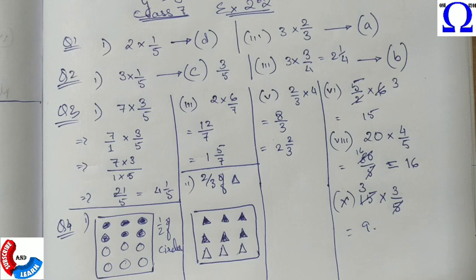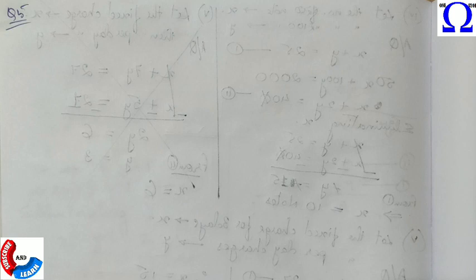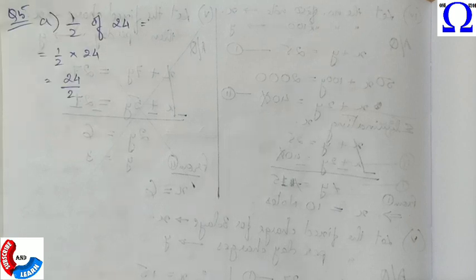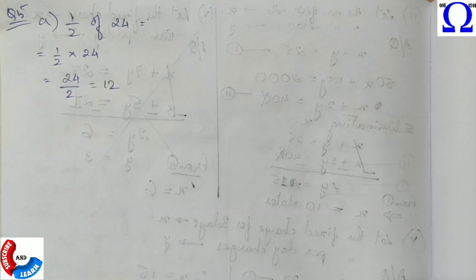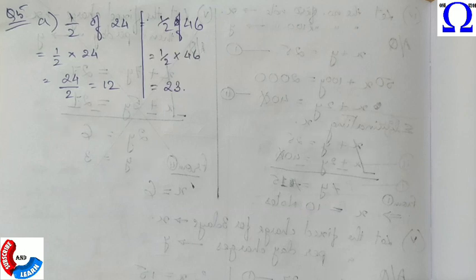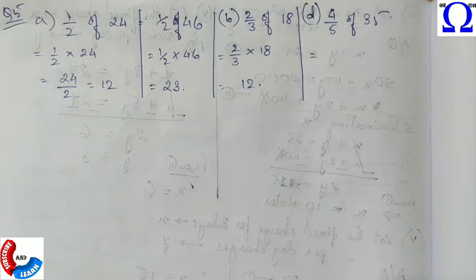Question number 5, we need to find half of 24. So 'of' means multiply. We can do this like this, or we can first divide and then write the answer also.